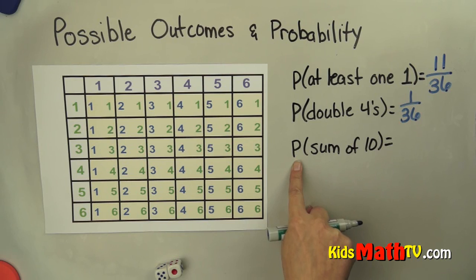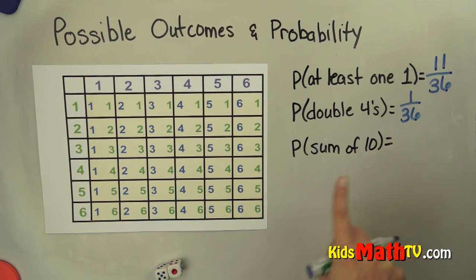One more. What's the probability that the sum of the numbers will be 10? So you get a sum of 10. If I look at all of these possible outcomes...